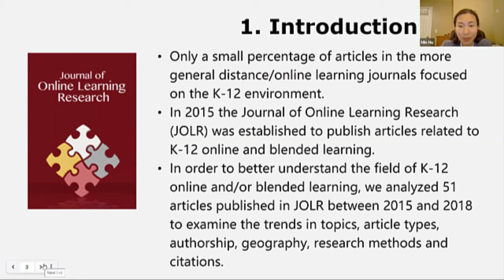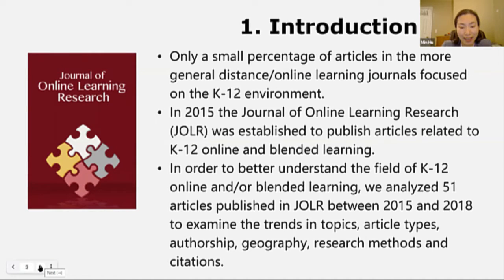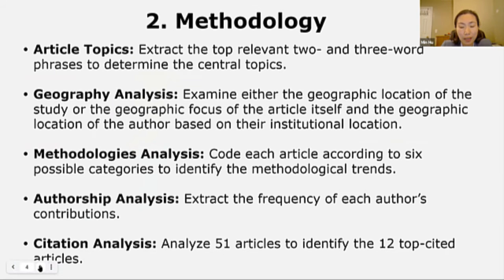To complete our analysis, we reviewed all 51 articles published in JOLR between 2015 and 2018, excluding editorials and book reviews. This study analyzed those articles for trends in topics, article types, authors, geography, and citations. Specifically, to analyze the article topics, we entered the 51 abstracts into a text analysis tool to extract the top relevant two and three word phrases to determine the journal's central topics.